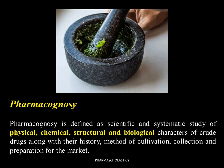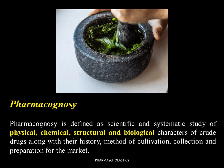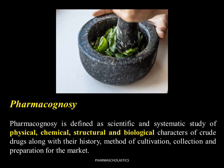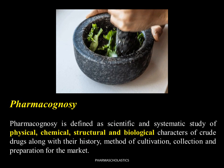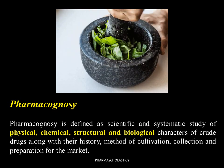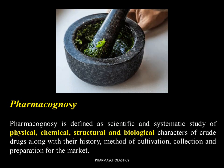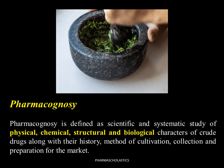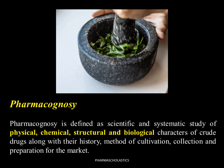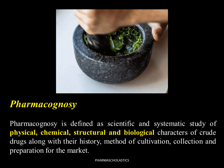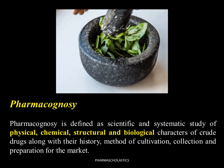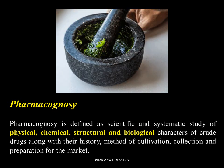Pharmacognosy is the subject of crude drugs obtained from plants, animals, and mineral origin. It is the objective study of crude drugs from natural sources processed scientifically. The word 'crude drug' is self-explanatory and is used to mean a simple drug as it exists in its natural form. Crude drugs are plants and animal drugs that have undergone no other process than collection and drying. Broadly, pharmacognosy is defined as the scientific and systematic study of the structural, physical, chemical, and biological characters of crude drugs along with their history, method of cultivation, collection, and preparation for the market. Synthetic drugs do not fall within the scope of pharmacognosy.